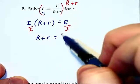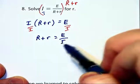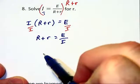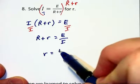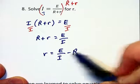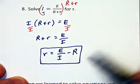r plus little r is equal to capital E over capital I. Now solving for little r we can subtract the capital R off of each side and have capital E over capital I minus capital R as the solution for this problem.